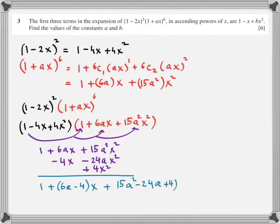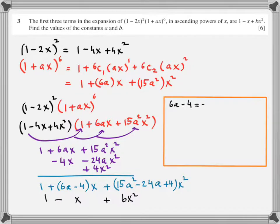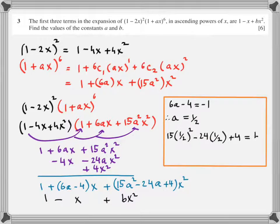Adding up all the terms vertically, the coefficient of x is 6a minus 4 and the coefficient of x squared is 15a squared minus 24a plus 4. Comparing coefficients: 1 equals 1; 6a minus 4 equals minus 1. From this you find the value of a, then plug into the next equation to find b. That's binomial: selective multiplication and comparing coefficients.